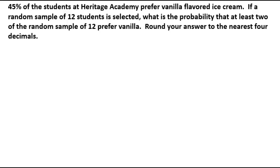With this probability question, it says that 45% of the students prefer vanilla ice cream. We're going to take a random sample of 12 different students, and we want to know the probability that at least 2 of this random sample of 12 prefer vanilla.